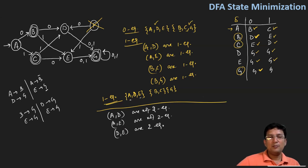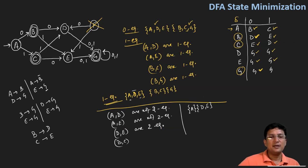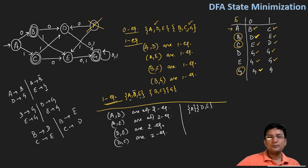By this, we can decide that A belongs to a different set and D and E belong to a different set. Now we check for B and C. B on zero goes to D and C on zero goes to E — D and E are in the same set. B on one goes to E and C on one goes to D — E and D are also in the same set. Hence, B and C are two equivalent. The outcome of two equivalence gives us these sets.